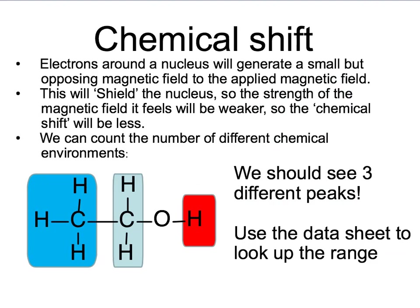Electrons orbiting the nucleus will also generate a small magnetic field, opposing the one applied. This would effectively reduce the strength of the magnetic field felt by the nucleus, causing the energy pulse given off during relaxation also to be slightly less. This is called a chemical shift, because it is caused by the chemical environment around the nucleus. This means that each nucleus surrounded by the exact same electron density will have an identical chemical shift. If the nucleus is in a slightly different chemical environment, then the chemical shift will be slightly different. This means we can count the number of different chemical environments within a molecule.